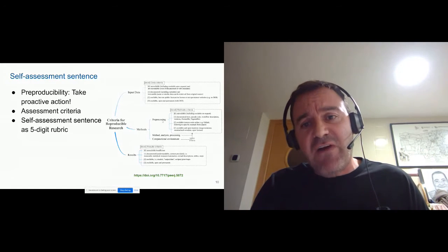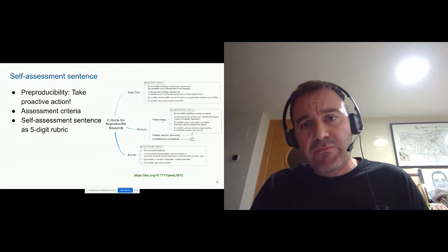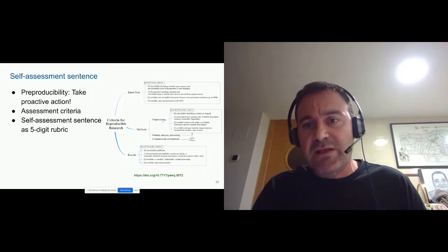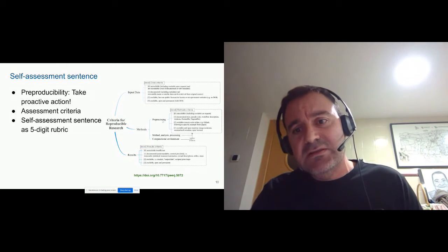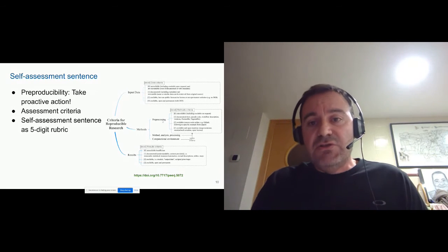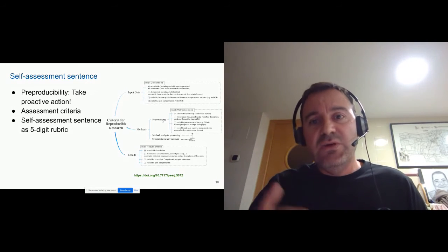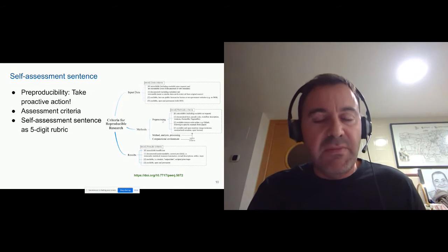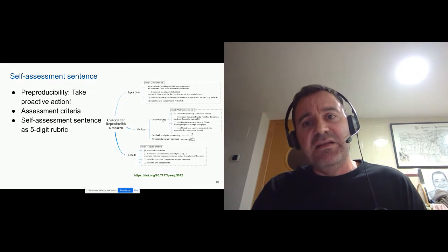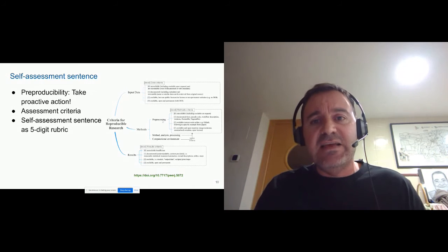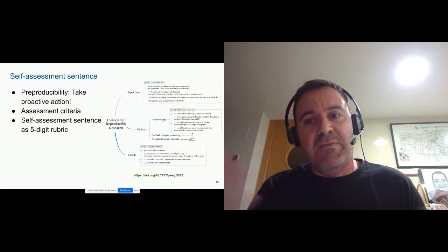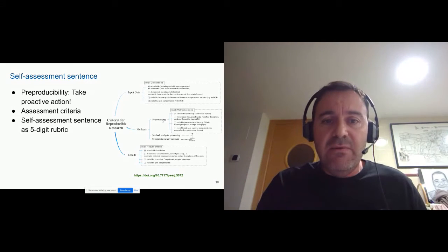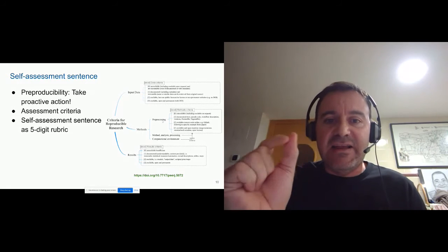We came up with five different dimensions: input data, methods, and results — where the methods dimension can be subdivided into three more: methods during preprocessing, the methods themselves, and the computational environment. For each dimension, you have a different level from zero to three. Zero is basically not available — for instance, input data not mentioned in the paper. If you assign level three for input data, that means this is the ideal case: it's labeled, open, and with a permanent URL or DOI. The idea of the experiment was for students to evaluate the level of reproducibility according to this criteria and assign a particular level, giving a five-digit rubric.